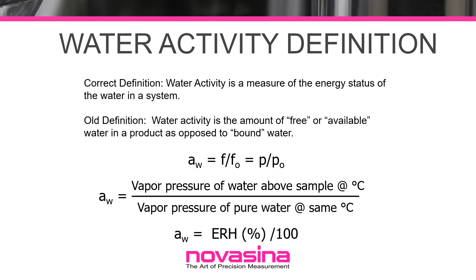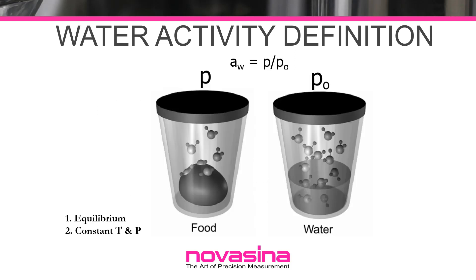Water activity is often referred to as 'free water,' and while useful when referring to higher energy, it is incorrect since 'free' is not scientifically defined and is interpreted differently depending on the context. Rather than a water activity of 0.5 indicating 50% free water, it more correctly indicates that the water in the product has 50% of the energy that pure water would have in the same situation. The lower the water activity, the less the water in the system behaves like pure water.